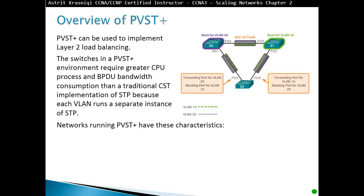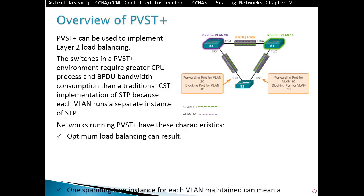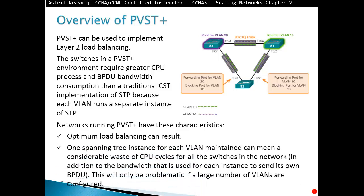Per-VLAN Spanning Tree Plus can be used to implement Layer 2 load balancing. However, switches in a PVST+ environment require greater CPU processing and BPDU bandwidth consumption than traditional Spanning Tree, because a separate Spanning Tree runs for every VLAN. One Spanning Tree instance per VLAN can mean considerable waste of CPU cycles, and this becomes problematic in large networks with many VLANs configured.